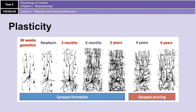During infancy, the brain experiences a rapid growth in the number of synaptic connections it has, peaking at around 15,000 at the age of 2 to 3 years — about twice as many as there are in an adult brain. As we age, the connections we rarely use are deleted or become dormant, and those frequently used are strengthened. That process is known as synaptic pruning.